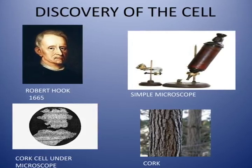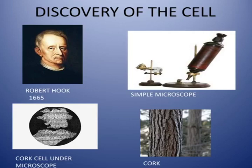In 1665, Robert Hooke, an English scientist, looked at a thin slice of cork — a very thin slice of the bark of a tree — through a compound microscope. He observed many tiny, hollow room-like structures resembling a honeycomb and called them cells. Hooke only saw the outer cell walls because cork cells are not alive.